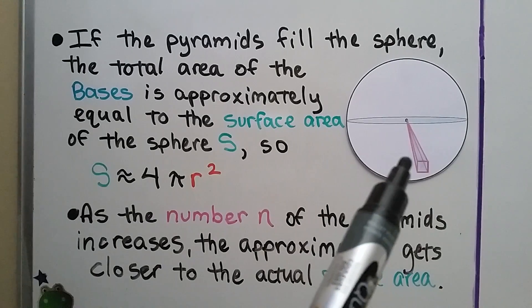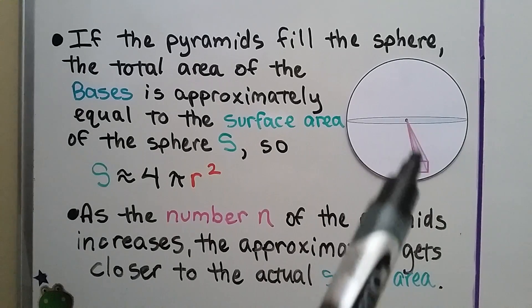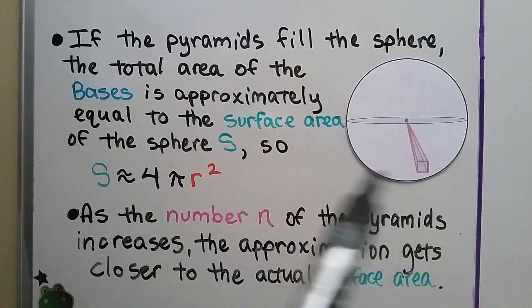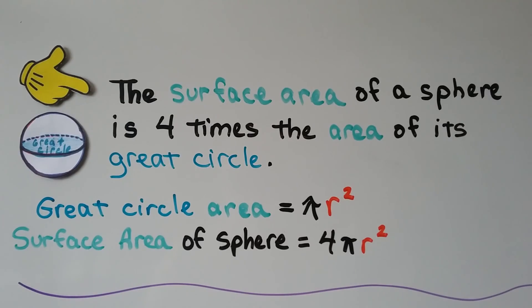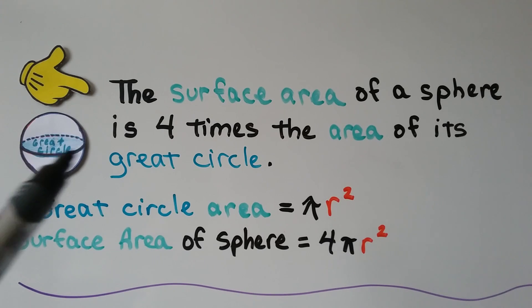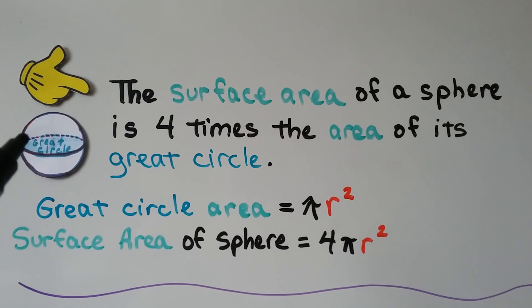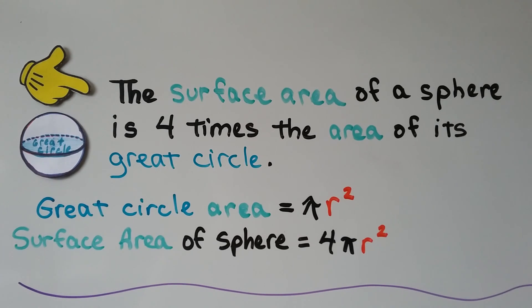The surface area S is approximately 4 times pi times the radius squared. As the number n of pyramids increases, the approximation gets closer to the actual surface area. The great circle splits the sphere into hemispheres, and the surface area of a sphere is 4 times the area of its great circle.